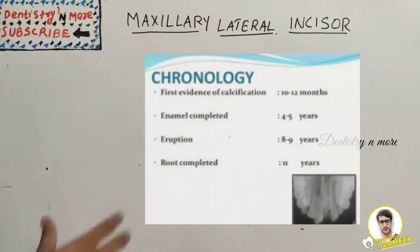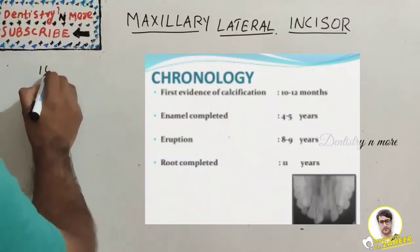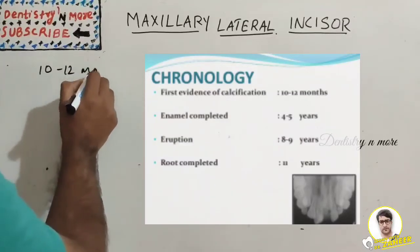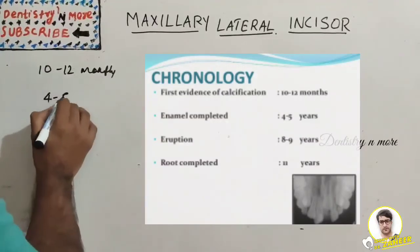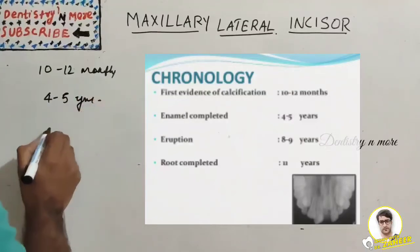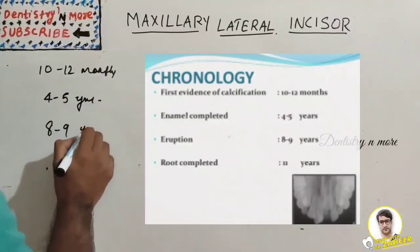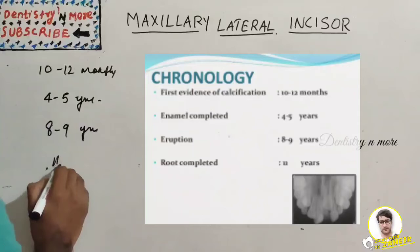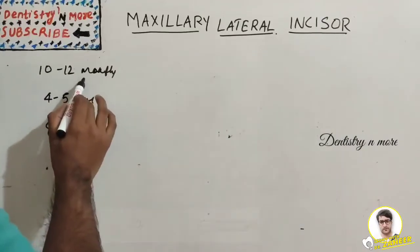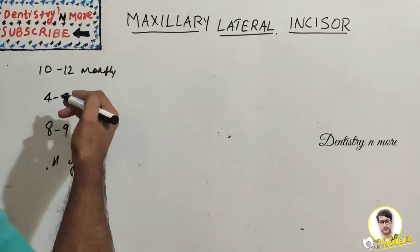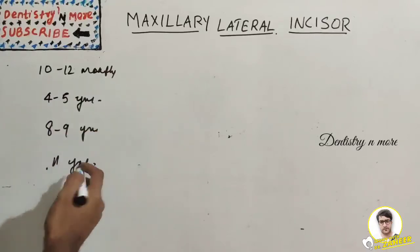Regarding chronology, the first evidence of calcification is at 10 to 12 months. Completion of enamel (crown completion) occurs by four to five years. Eruption takes place by eight to nine years, and root completion is at 11 years. So the sequence is: first evidence of calcification, then crown completed, then eruption, and finally root completion.